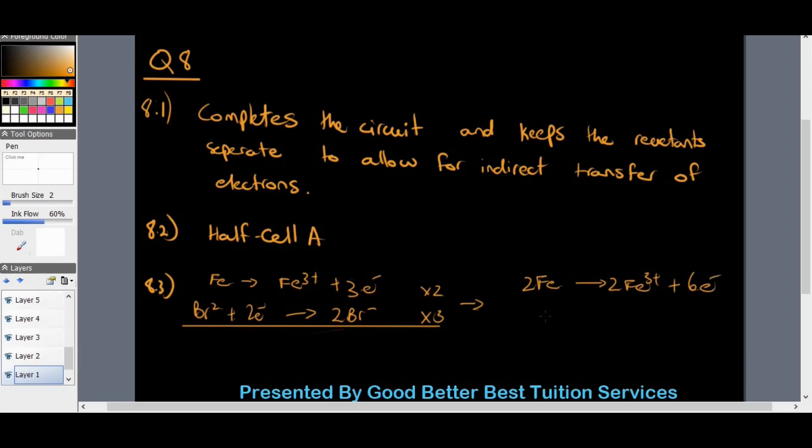To get on this side, an equation of 2Fe goes to 2Fe3 plus 6 electrons. And that's going to give us 6Br minus. All right, we know these cancel.